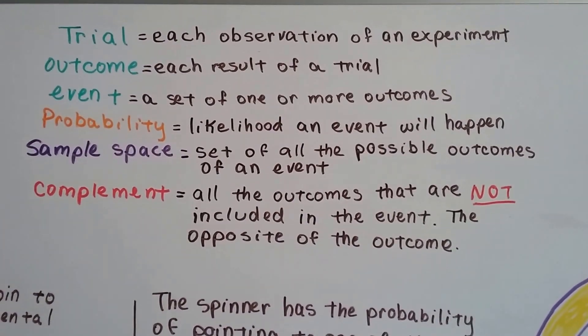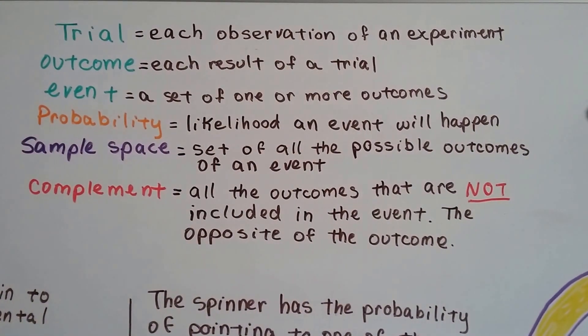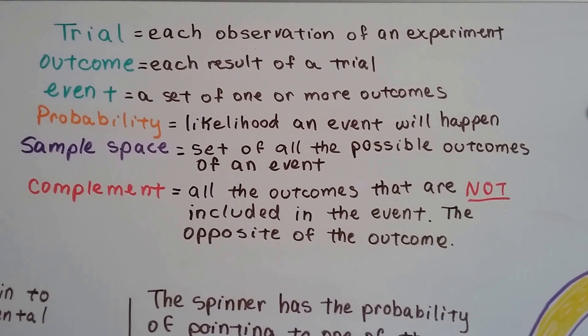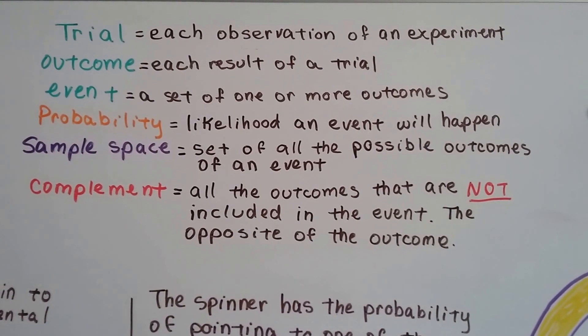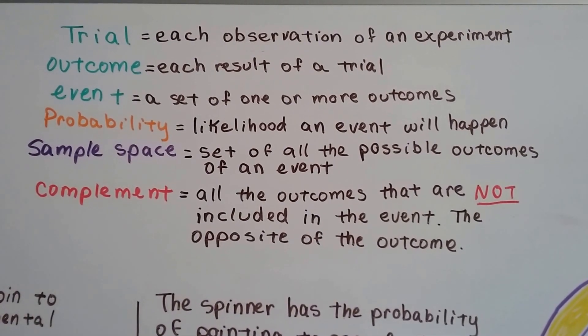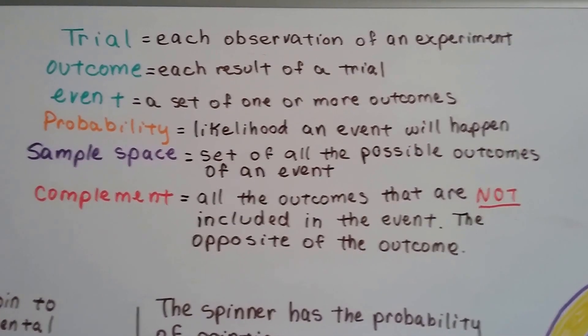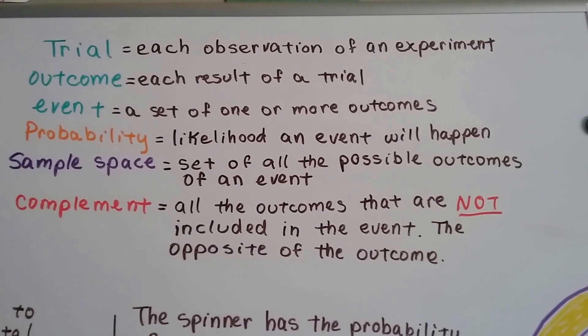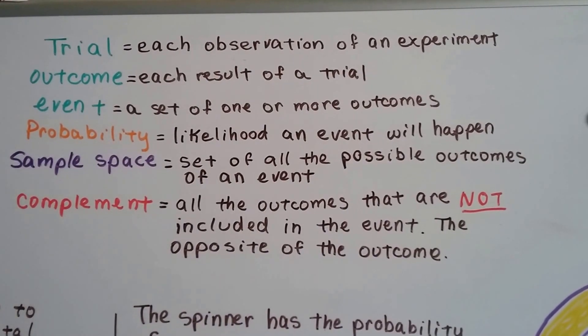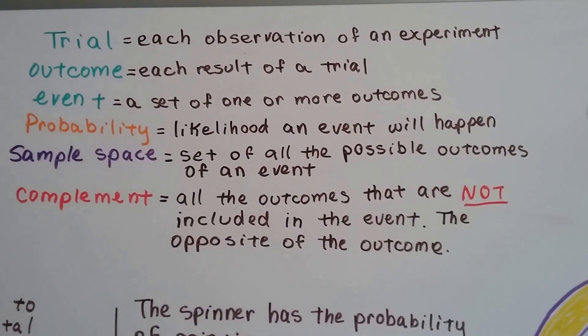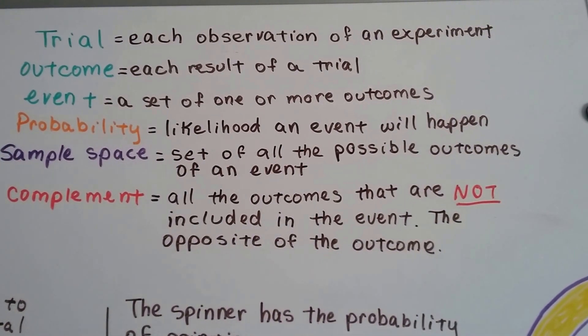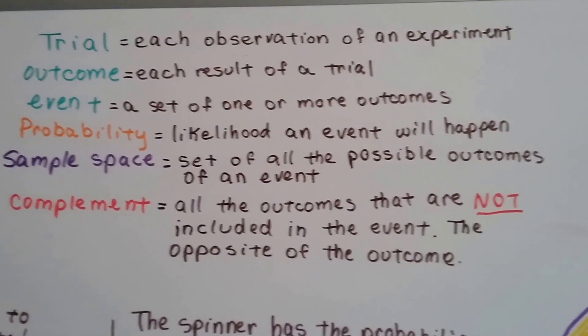A trial is each observation of an experiment. So every time we watch it, it's a trial. An outcome is the result of that trial. An event is a set of one or more outcomes. Probability is the likelihood that an event will happen. A sample space is a set of all the possible outcomes of an event. And a complement is all the outcomes that are not included in the event. It's the opposite of the outcome.